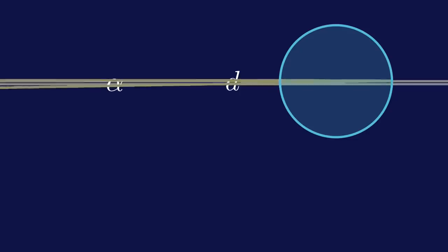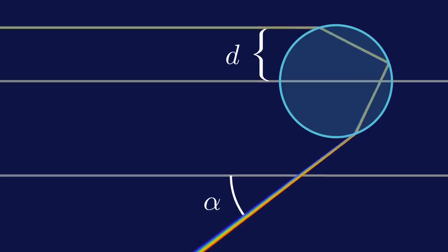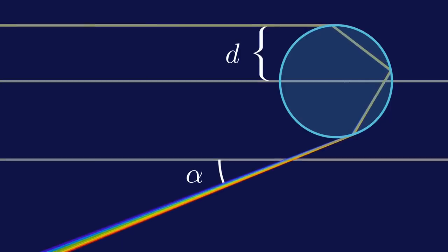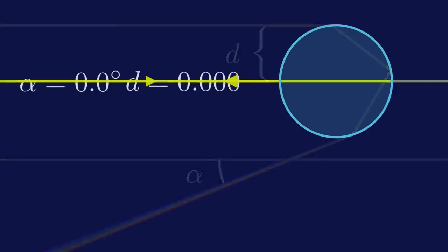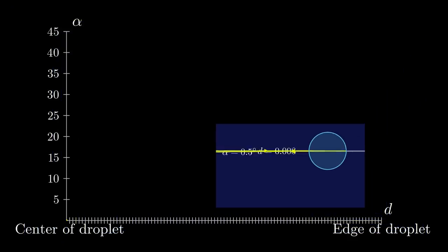It's true that the angles depend a little on the wavelength of the light too, but the effect of changing color is much smaller than the effect of moving to or from the center. Let's focus again on a single color and draw a graph to visualize the dependence of the angle alpha on the distance d.